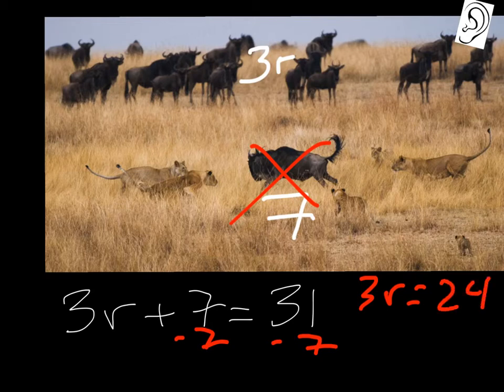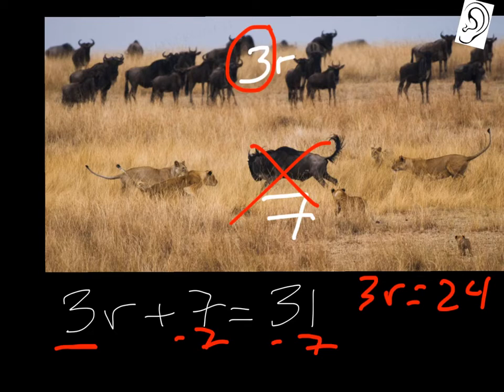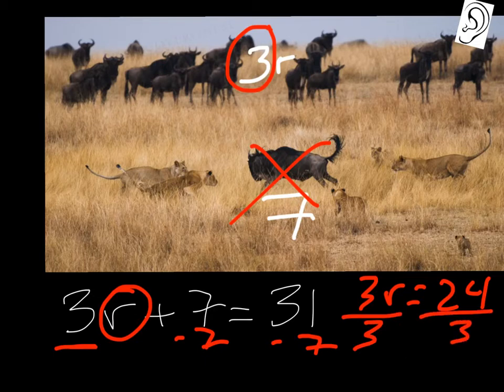Now we can get into the herd of wildebeests. We have this 3 that's directly connected to the herd — it's the middle of the pack — so now that the straggler is eliminated, we must go into the herd to get our meal. We need to eliminate this 3. So we divide by 3, the opposite operation, and remember the golden rule of algebra says we divide both sides by 3. So 24 divided by 3 gets us r equals 8.